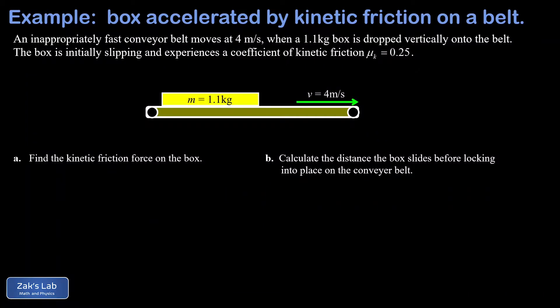In this video we're covering a relatively rare case of kinetic friction doing positive work. The setup is that we're dropping a pizza box onto a conveyor belt moving at four meters per second to the right. The box immediately begins to slip and accelerates.